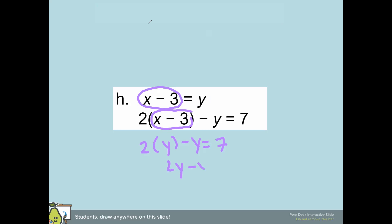And I get 2y minus y equals 7, so I get y is equal to 7.